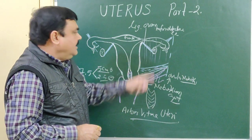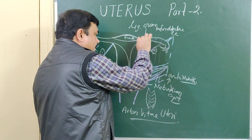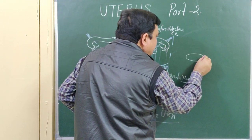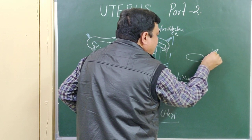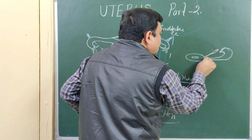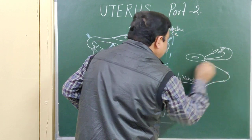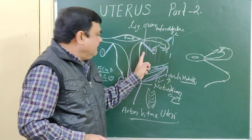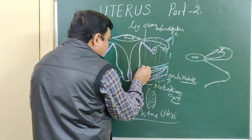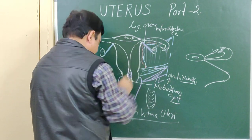Now let's discuss the contents of the broad ligament. You can see the broad ligament contains the ligament of the ovary, the fallopian tube, and the round ligament. In the diagram you can see the ligament of the ovary, the fallopian tube, and the round ligament — all of which are contents of the broad ligament.